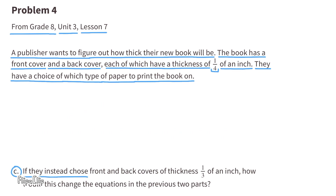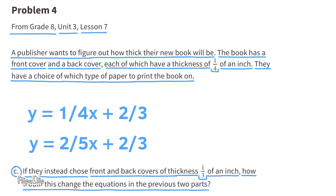Part C: If they instead choose front and back covers of thickness 1/3 of an inch each, how could this change the equations? This would change the constant term representing cover thickness. For the first equation it would change to y equals 1/4 x plus 2/3, and the second equation would change to y equals 2/5 x plus 2/3.